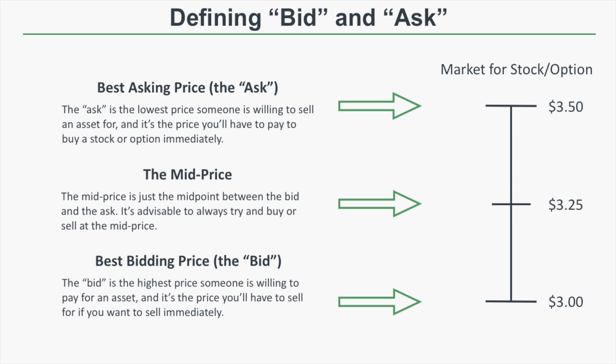Before getting into the bid-ask spread, let's talk about the terms bid and ask by themselves. The ask is the lowest price someone is willing to sell an asset for — it's the price you'll have to pay if you want to buy a stock or option immediately. The bid is the highest price someone is willing to pay for an asset and it's the price you'll have to sell for if you want to sell immediately.